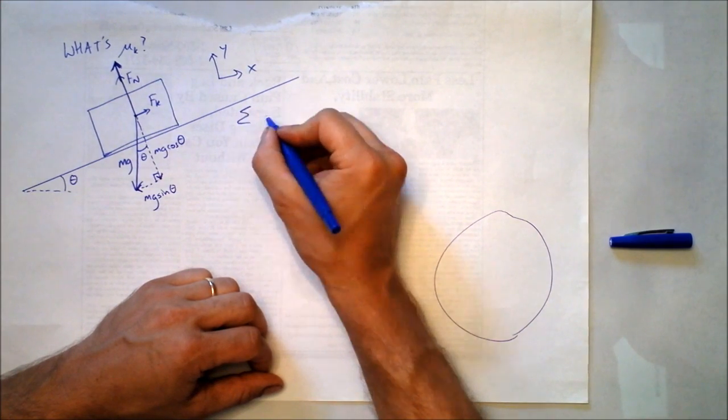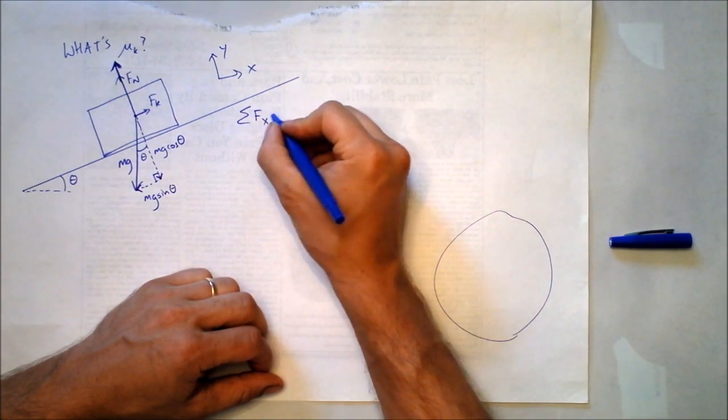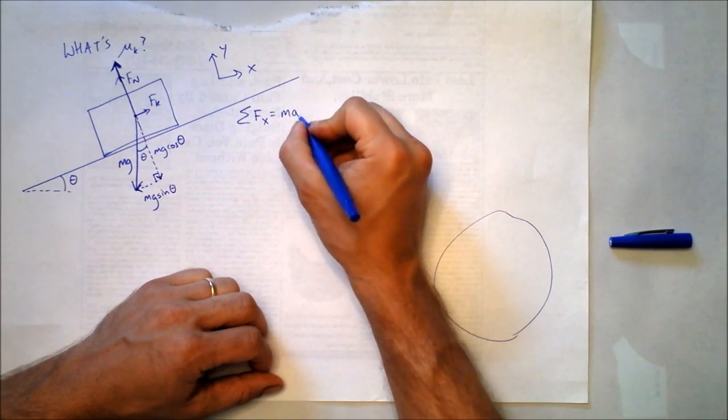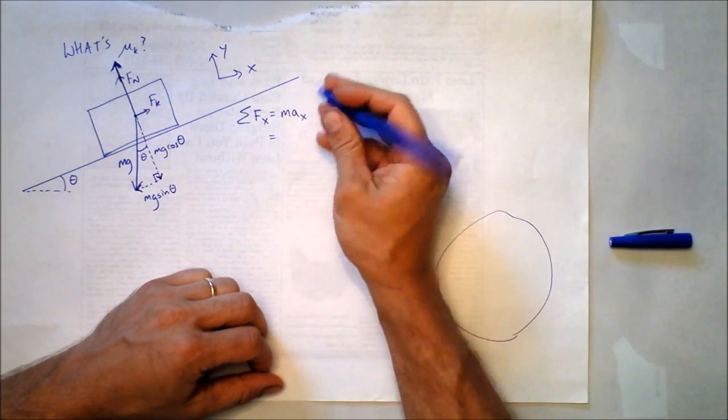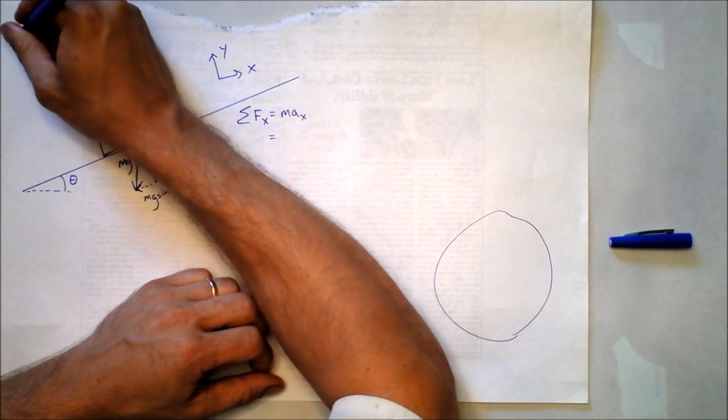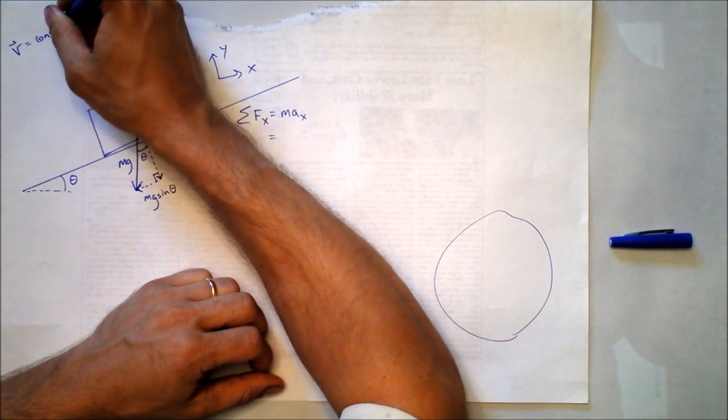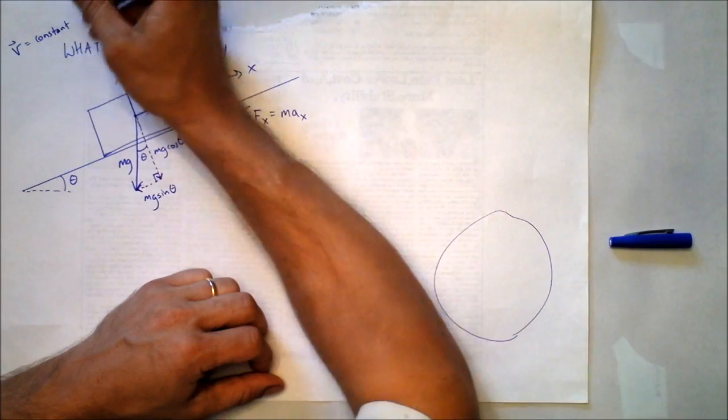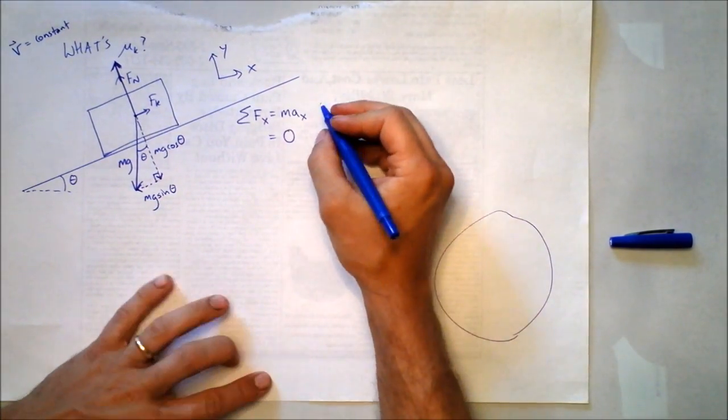Let's do Newton's second law in the x direction. The force in the x direction is mass times acceleration in the x direction. Now what did they say? They said v is constant. Since v is constant, we don't have any acceleration. So this is going to be zero.